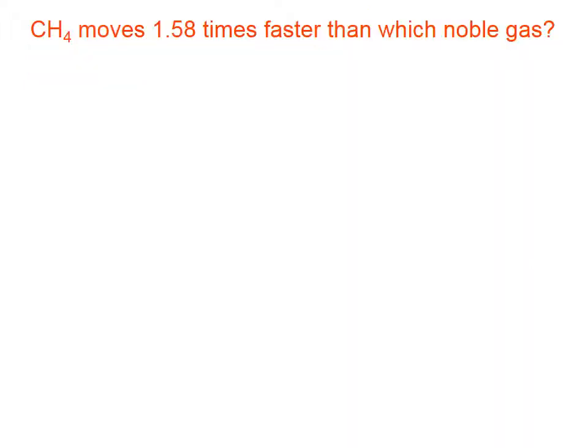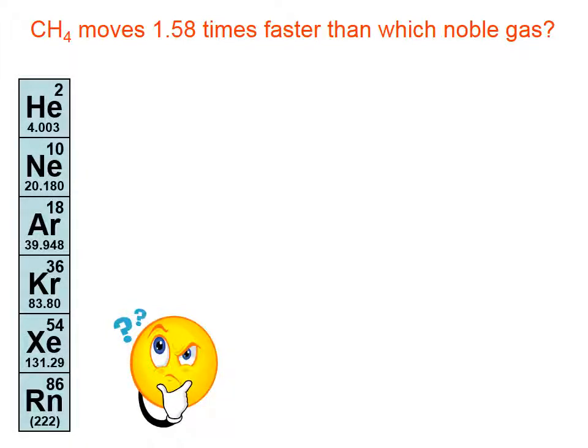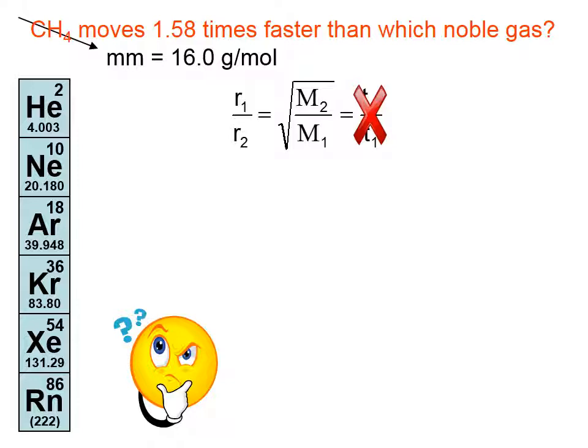So let's do an example calculation with Graham's Law. CH4 moves 1.58 times faster than which noble gas. Here are our choices. It's like a multiple choice problem. It's one of these, and we just have to figure out which one it is. So there's Graham's Law. We are not dealing with time here, so I'm going to cross that off. We are going to be dealing with masses, because that's how we're going to identify which of these noble gases it is by the molar mass. And we are dealing with rates of effusion. Let's find the molar mass of methane to be 16 grams per mole. And we are told that these particles, on average, are traveling faster.